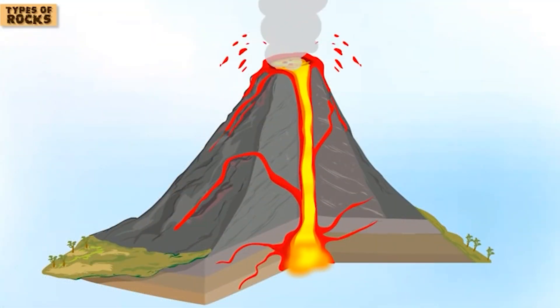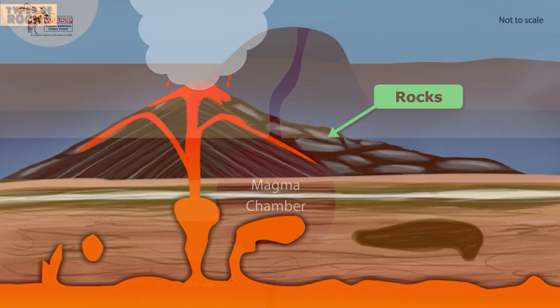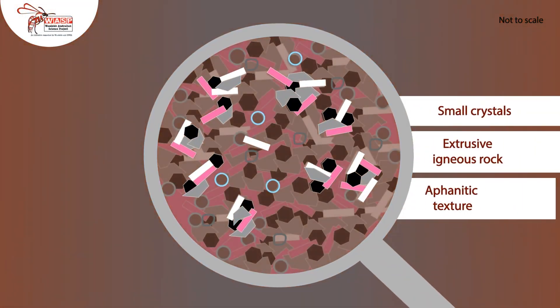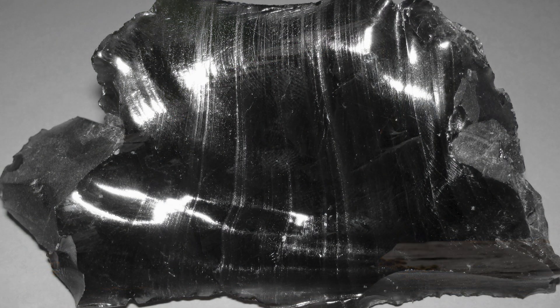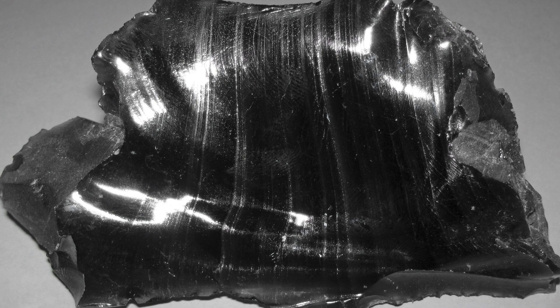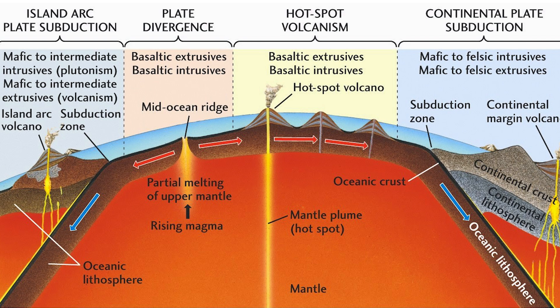Extrusive igneous rocks, on the other hand, form when magma erupts onto the surface as lava and cools quickly. This rapid cooling results in small crystals or even a glassy texture. Examples include basalt, which you'll find in volcanic islands and ocean floors, and obsidian, a natural glass formed from volcanic lava. These igneous rocks form the foundation of the earth's crust. Every continent, every ocean floor has a base made of this type of rock, but the story doesn't end here.